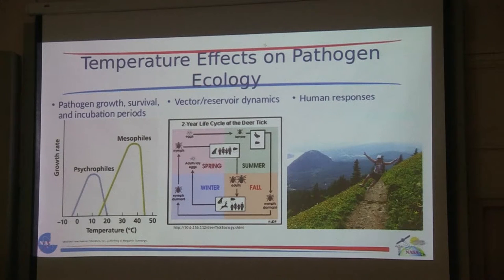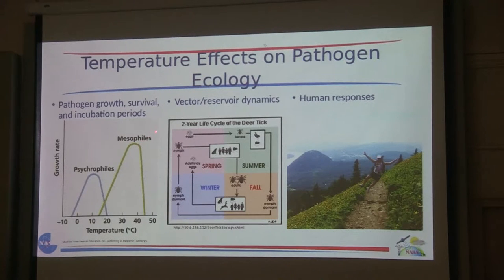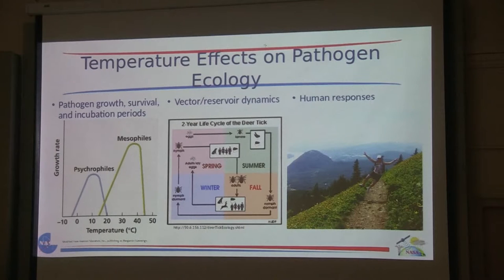Temperature can affect pathogen growth, survival, or incubation periods. Most bacteria — including mesophiles, which are typically human disease-causing bacteria — show growth rates that increase with temperature up to a certain point, then fall more quickly at very high temperatures. At 10 degrees Celsius, you won't get much growth from mesophiles, so it's very unlikely you'll transmit that type of bacteria. This relationship between temperature and bacterial growth is fundamental to understanding disease transmission seasonality.